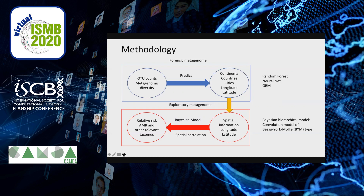The second mainstream of our study is the exploratory metagenome analysis, which includes spatial information — longitude and latitude — and other covariates in order to estimate the relative risk of antimicrobial resistance and other relevant taxa. Methodologically, this part uses a Bayesian hierarchical model and a convolution model of a certain type.